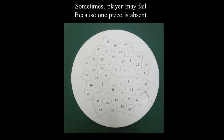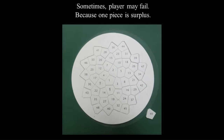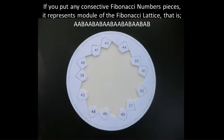But sometimes a player may fail because one piece is absent. Another mistake: sometimes a player may fail because one piece is surplus. If you put any consecutive Fibonacci number pieces, it represents the module of the Fibonacci lattice.